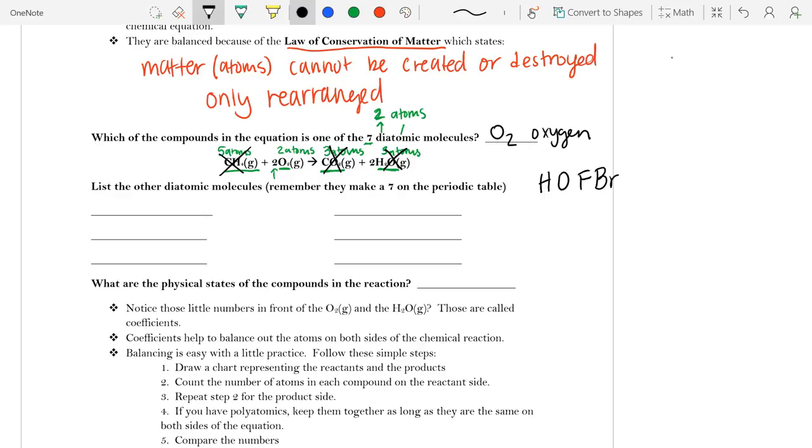And so that is the symbols that represent the elements that are the diatomic molecules. So if we look at capital letter H, capital letter H, diatomic would be H2, and that is hydrogen gas.